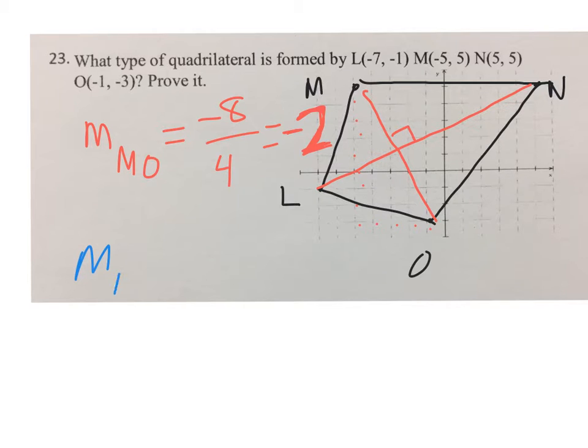From L to N, I have to go up six, over twelve. Six over twelve gives me a one half slope.